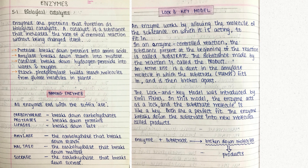We can test for starch using iodine. If the iodine on the sample turns blue-black, that shows starch is present, whereas if it just remains brown, starch is not present. We do the DCPIP test for vitamin C. DCPIP solution is originally blue in colour, but if vitamin C is present, it turns from blue to colourless.